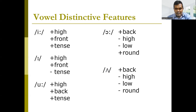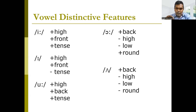That's all for the distinctive features of vowels. Once again, they are characterized by four factors: first, advancing or retracting the tongue — giving front and back vowels; second, raising or lowering the tongue — giving high and low vowels; third, rounding or not rounding the lips — giving round and unround vowels; and fourth, tense or lax — some vowels are tense and others are lax or negative tense. See you in the next video.